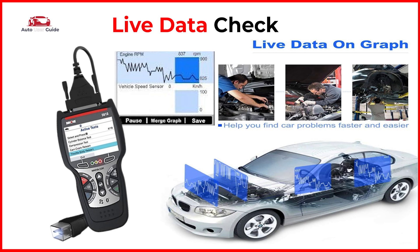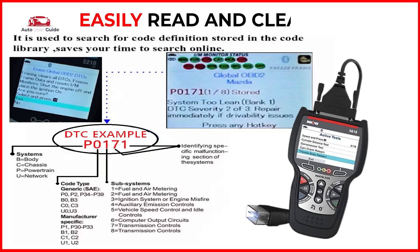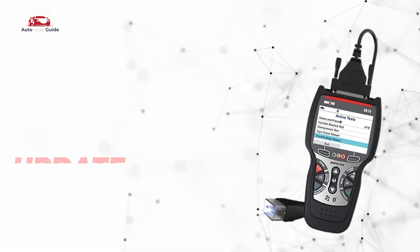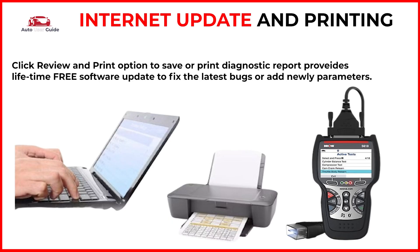Live data check: the view data function allows viewing of live or real-time PID data of the vehicle's computer modules. Easily read and clear codes: you can read and retrieve trouble codes including generic codes, pending codes, and manufacturer-specific codes on most domestic vehicles. Internet update and printing: the print data function allows printing out diagnostic data recorded by the scan tool or customized test reports.